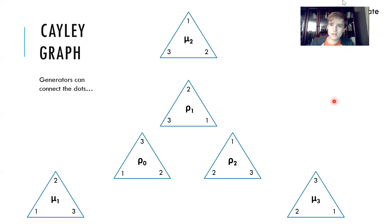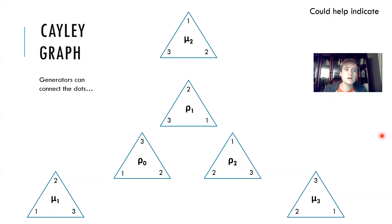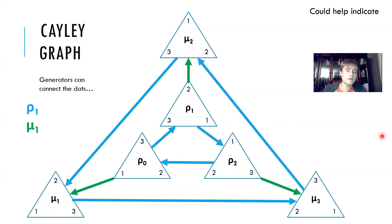We can see some properties of a group with the Cayley graph, which is pretty interesting, and that's kind of similar to how we can see properties with the Cayley table. If I color code this to have rho one be the blue arrows and mu one be the green arrows, then we can see some properties showing up in the graph.